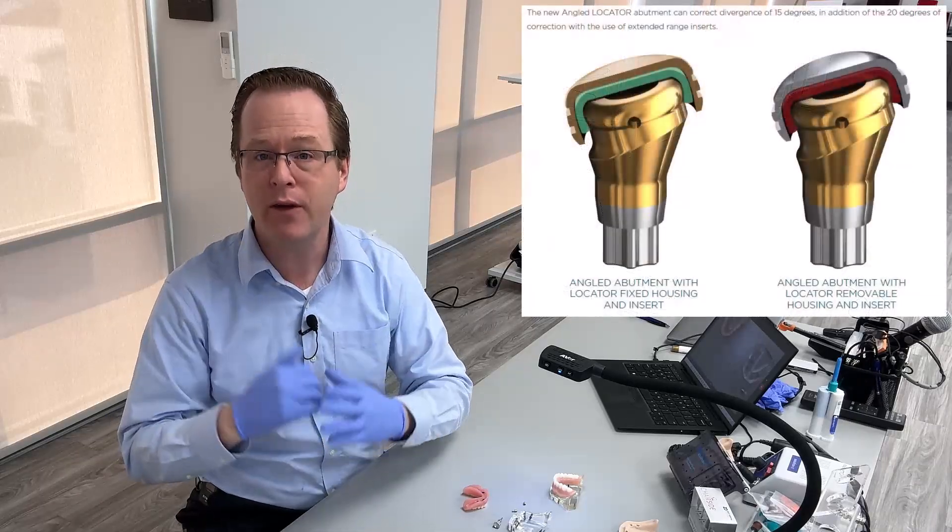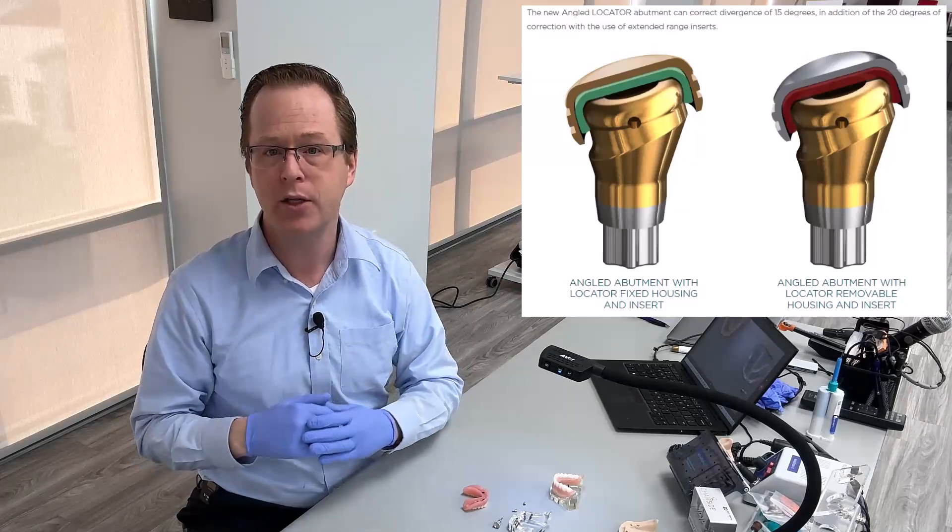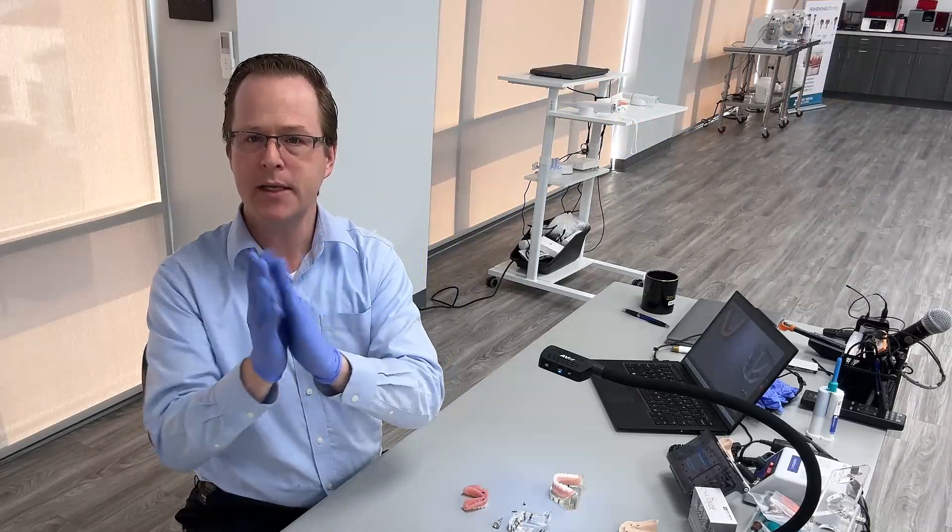But with locator angled, we can tilt those implants for up to 35 degrees of angulation because we get the extra 20 degrees of angulation correction with the extended range inserts, meaning 15 degrees of the abutment plus an additional 20 degrees of the extended range inserts.